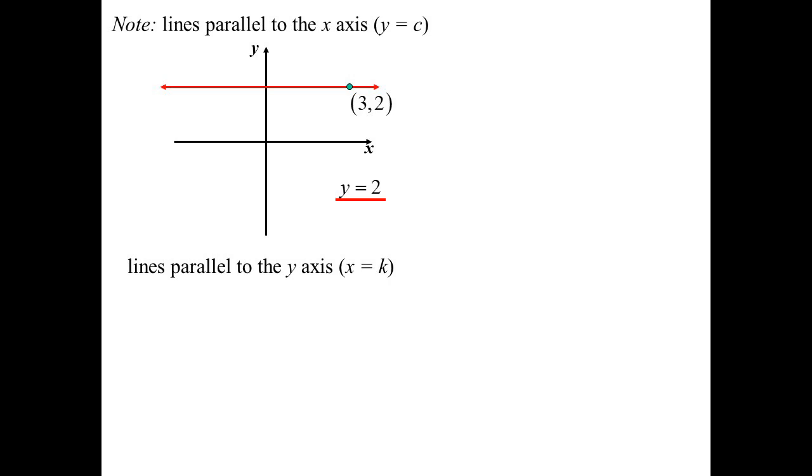A similar thing happens with vertical lines. So lines parallel to the y-axis. Going through the same point but now we know that that horizontal distance will always be 3. So we're getting x values that are always 3. So that's just two very special cases. Vertical and horizontal lines.